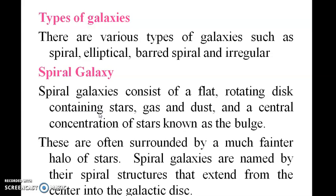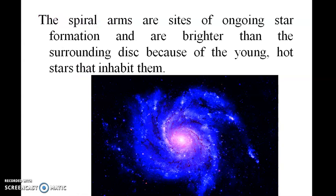Types of galaxies: A spiral galaxy consists of a flat rotating disc containing stars, gas, dust, and a central concentration of stars known as a bulge. These are often surrounded by a halo of stars. Spiral galaxies are named by the spiral structure that extends from the center into the galactic disc.